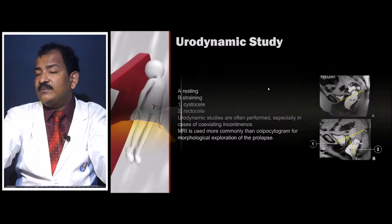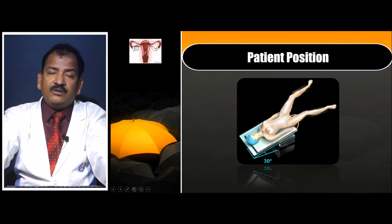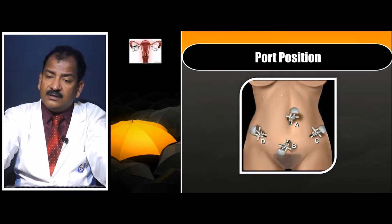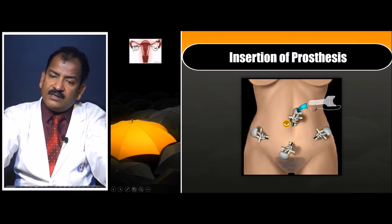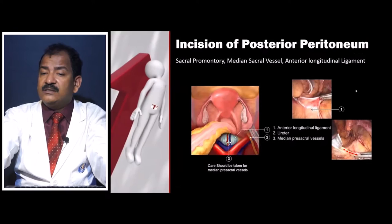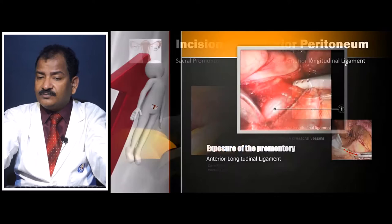MRI or colpocystogram can be used for assessment. To start the surgery, the patient is kept at 30 degrees head down. The surgeon stands on the left, one assistant on either side, and one or two monitors are used. The procedure is begun with a four-port technique. Mesh must be used and fixed depending on the type of prolapse — dual prosthesis, meaning two meshes, ultimately fixed to the sacral promontory.